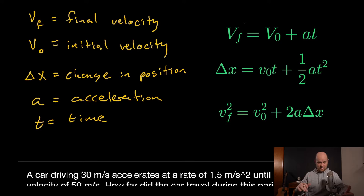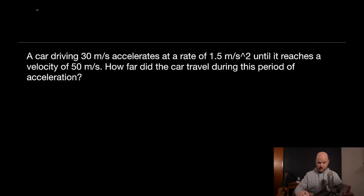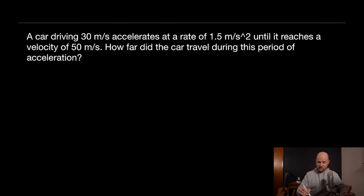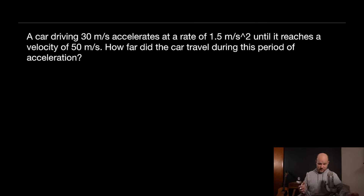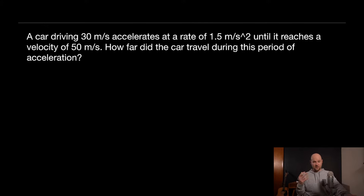Here is the problem: 'A car driving 30 meters per second accelerates at a rate of 1.5 meters per second squared until it reaches a velocity of 50 meters per second. How far did the car travel during this period of acceleration?'